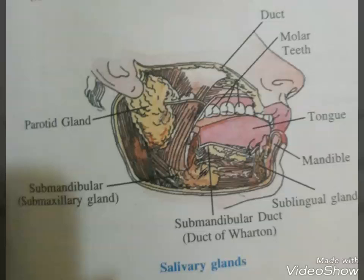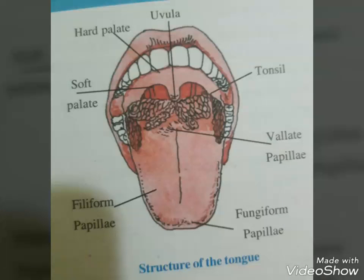The intestinal juice contains a variety of enzymes like disaccharidases, maltase, dipeptidases, lipase, nucleosidases, etc. The mucus along with bicarbonate from the pancreas protects the intestinal mucosa from acid as well as provides an alkaline medium for enzymatic activities. Some mucosal glands also help in this.